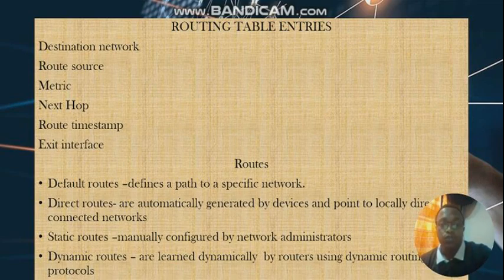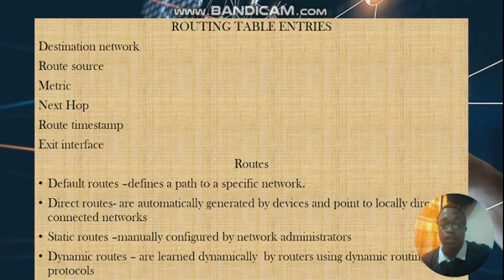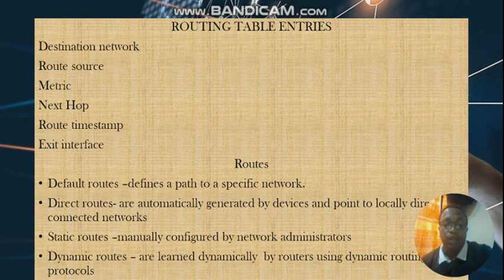There are different types of routes. A default route defines a path to a specific network. Direct routes are automatically generated by devices and point to locally directly connected networks. Static routes are manually configured by network administrators. Dynamic routes are routes that are dynamically learned by routers using dynamic routing protocols.